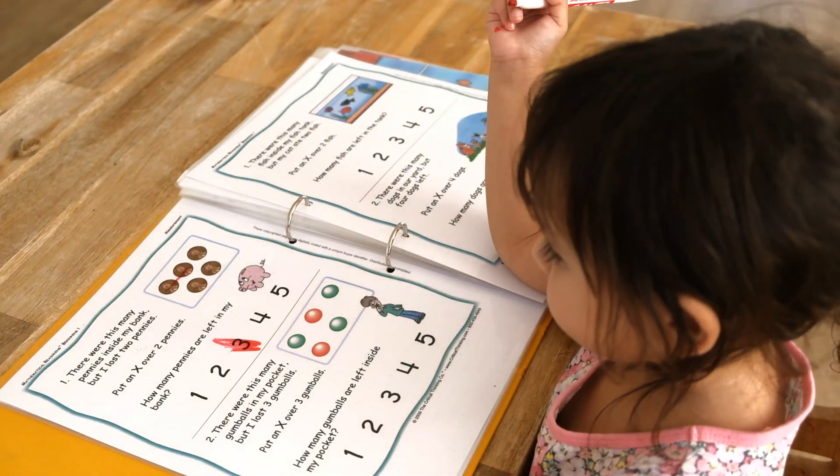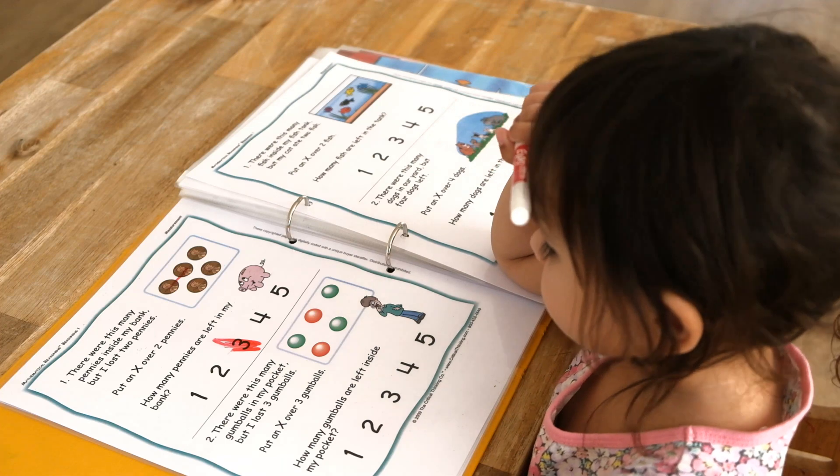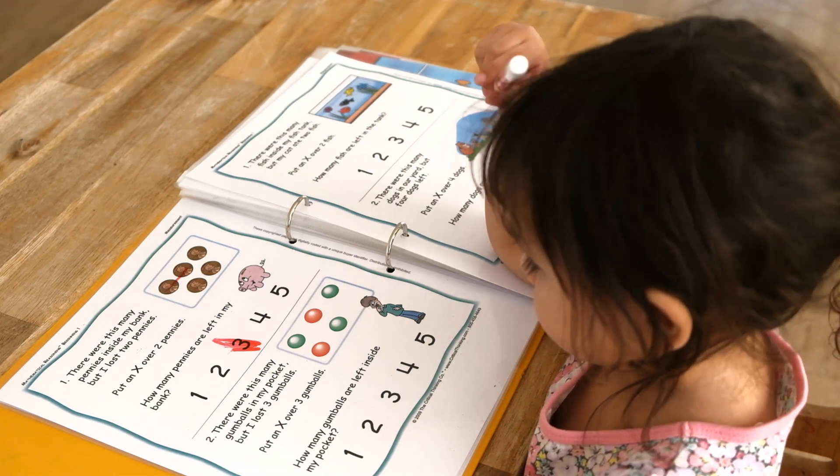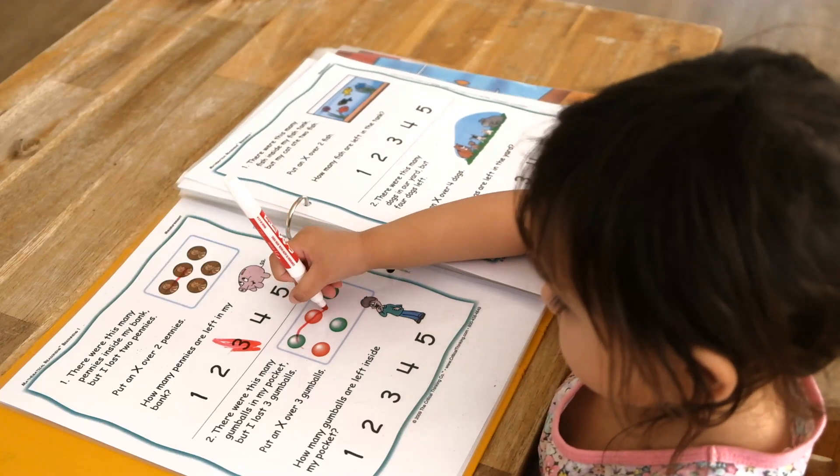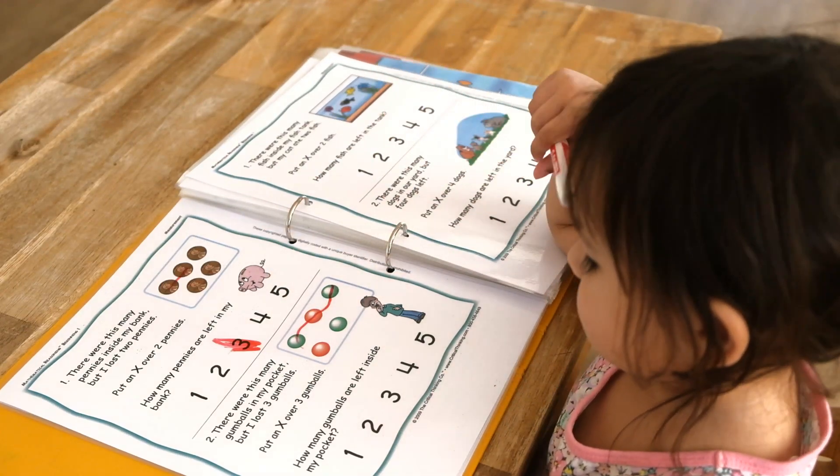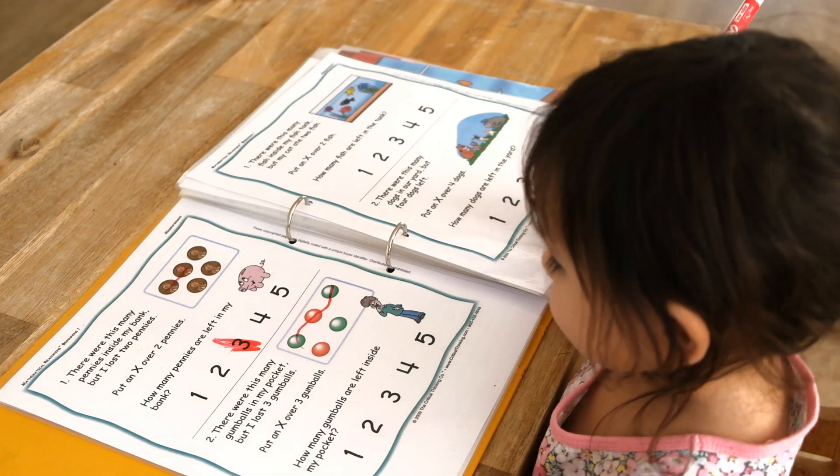There were this many gumballs in my pocket, but I lost three gumballs. Can you cross out three gumballs? How many gumballs are left? That's right. Can you circle number two?